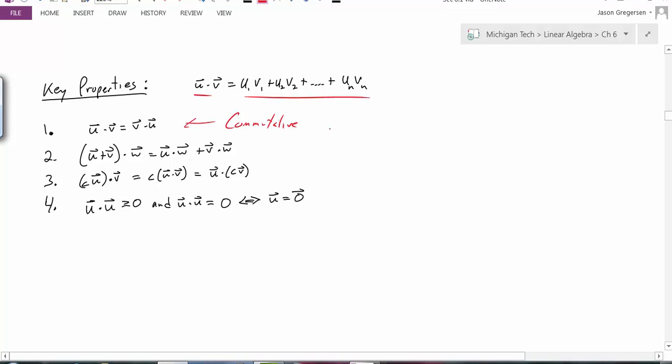And the next one says that (u + v) dotted with w is equal to u dot w plus v dot w. So this would be a distributive property. And then we have an associative property of scalar multiplication. And lastly, we have the property of positivity.